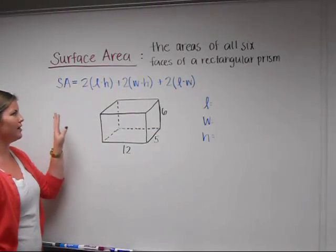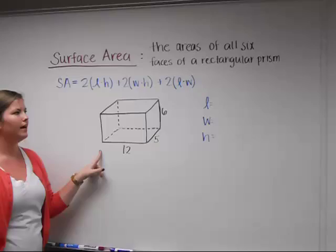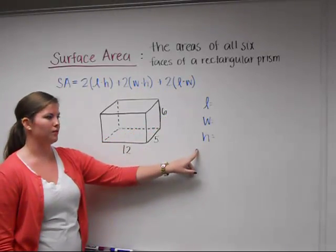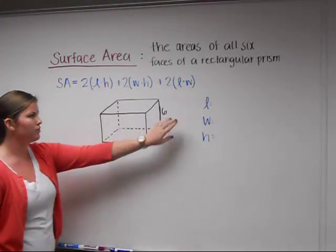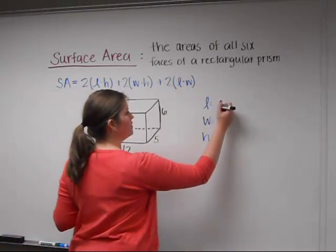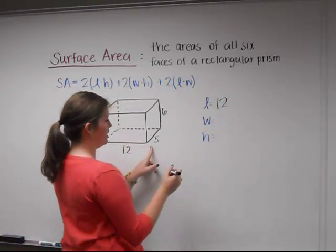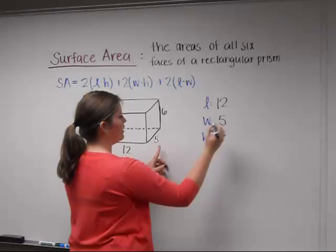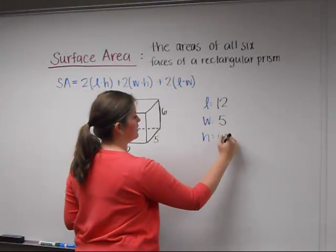So now that we have our equation, we're going to do an example, and we're going to fill in our variables. So first, our length is 12, our width is 5, and our height is 6.